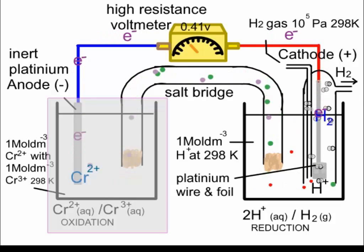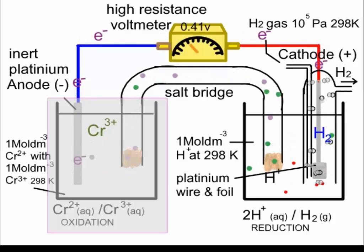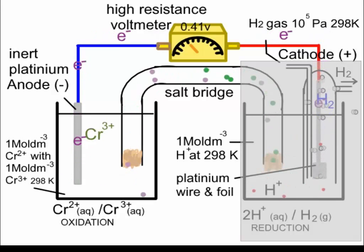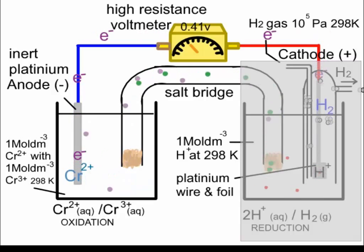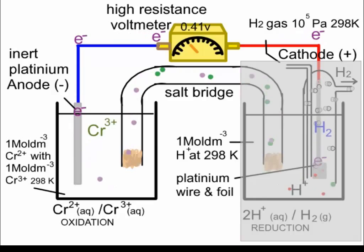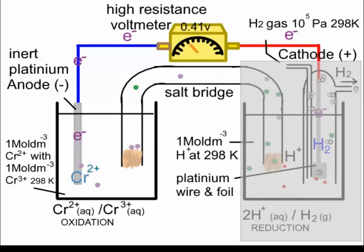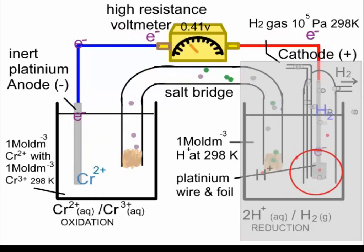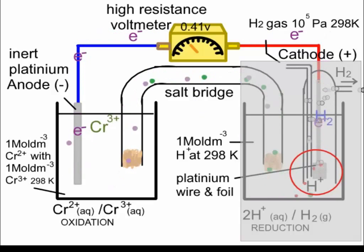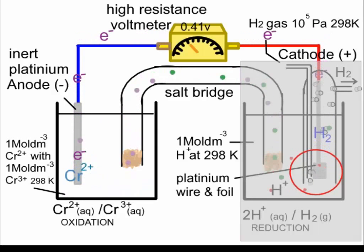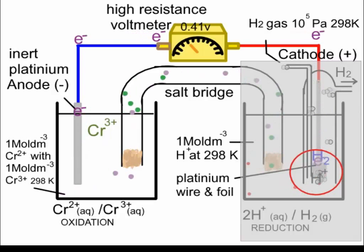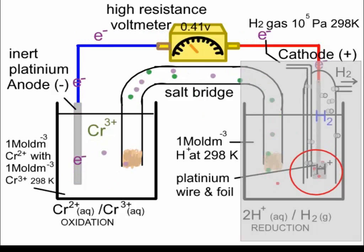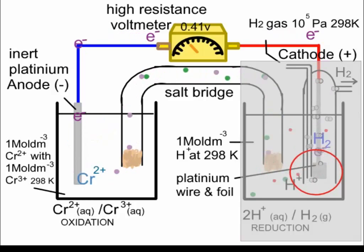Cr2+ ions arriving at the platinum anode undergo oxidation — they each give up one electron and form chromium 3+. The electrons generated by this oxidation move upwards and in a clockwise direction through the external circuit. On the right-hand side, at the standard hydrogen half cell, hydrogen ions arrive at the platinum plate, pick up electrons from the external circuit, form hydrogen atoms that pair up to form H2 molecules. Just as in electrolysis, oxidation takes place at the anode and reduction takes place at the cathode.